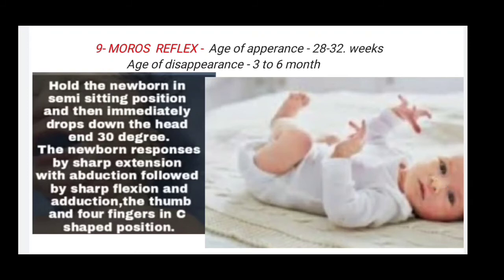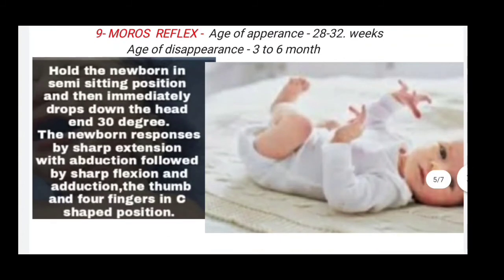Next is the Moro reflex. Age of appearance is 28 to 32 weeks and age of disappearance is three to six months. Hold the newborn in a semi-sitting position and then immediately drop the head down 30 degrees. The newborn responds by sharp extension with abduction, followed by sharp flexion and adduction, with the thumb and four fingers in a C-shaped position. In these images you can see the Moro reflex being demonstrated.